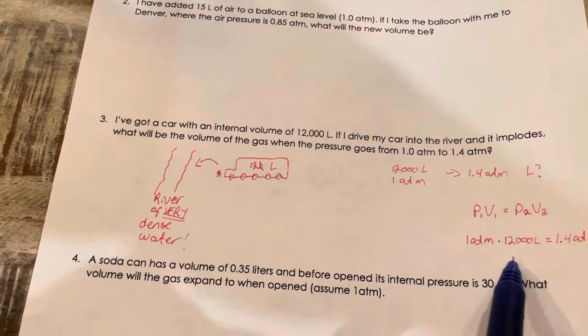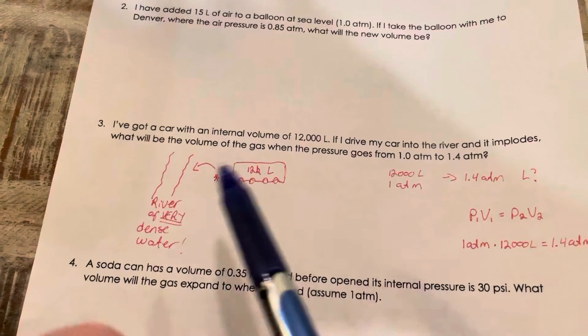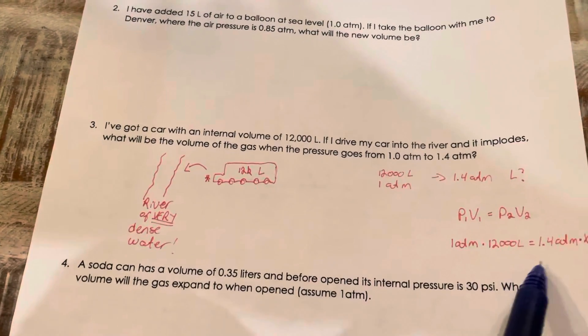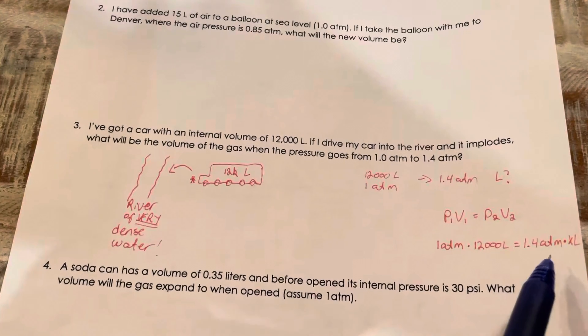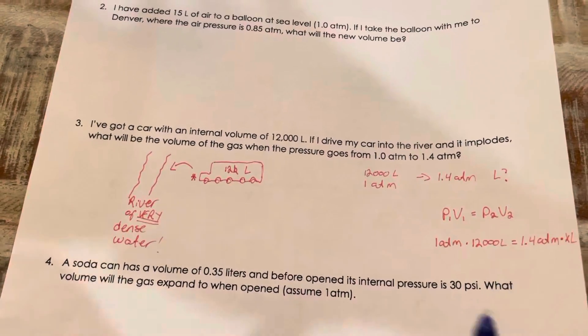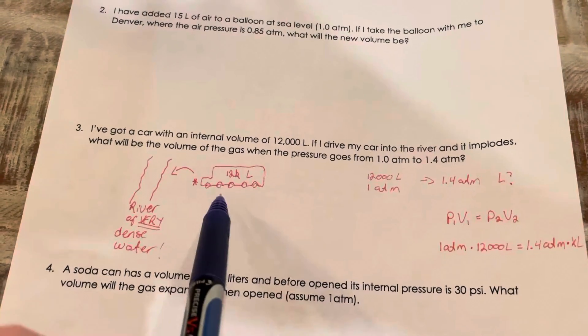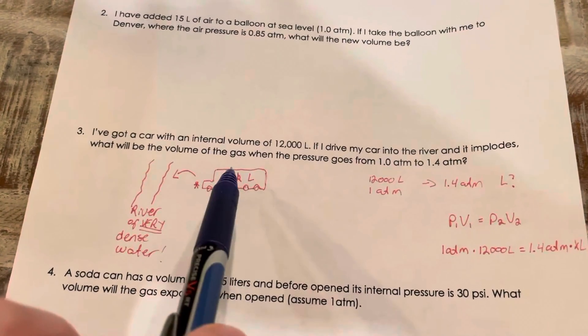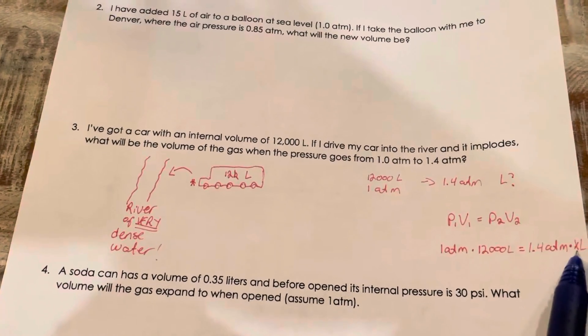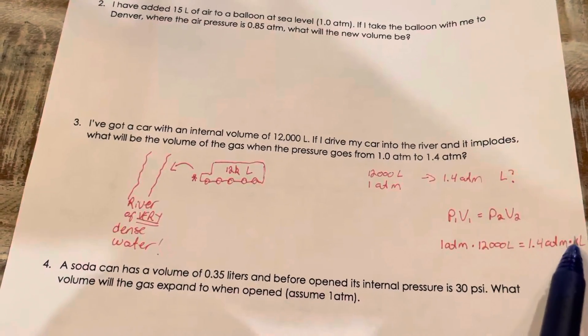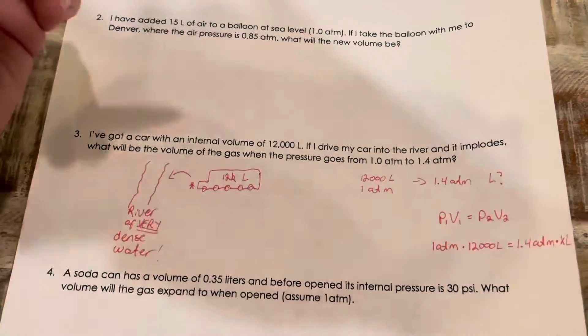And I know that after my car implodes in the river it turns into 1.4 atmospheres. So of course when it implodes, the car slash truck is gonna have less volume and so the air is gonna be more dense, but I don't know how much. So that's my X.